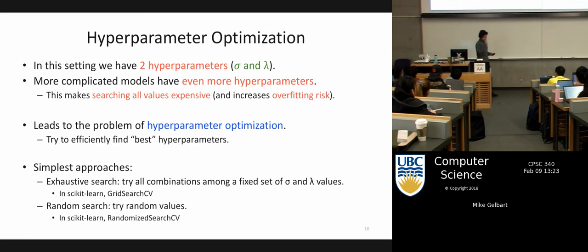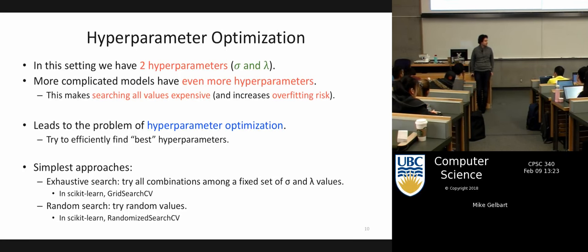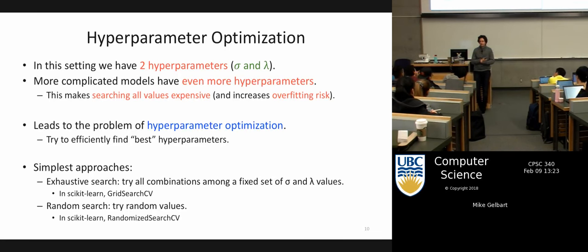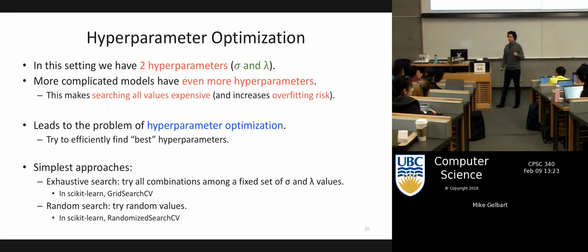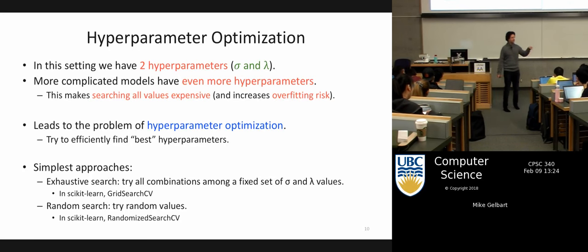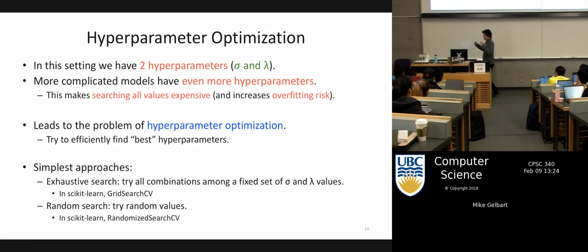Another popular choice is random search — just randomly pick sigma and lambda combinations, do however many you want, then take the best one. In Python, scikit-learn offers functions that package cross-validation with hyperparameter search. From the assignment, you've seen there are many loops to track: looping over hyperparameters, within that looping over k cross-validation folds, within that training the model with gradient descent — three nested loops. Scikit-learn provides methods that run the whole thing for you, making the grid and doing cross-validation.